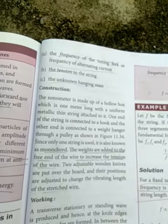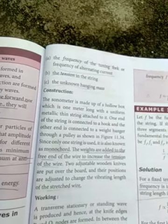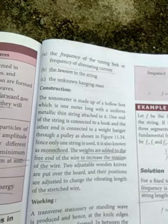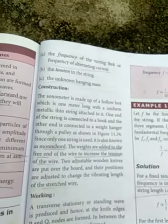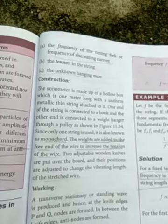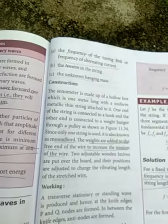So one end of the string is connected to the hook. So another end connected to a weight hanger through a pulley. Since only the one string is used, it is also known as the monochord. So what is it we are using to this experiment? We are using to the only one string. So that is we are called the monochord.